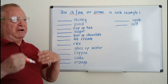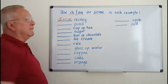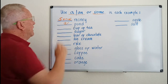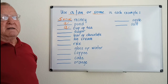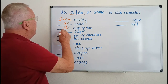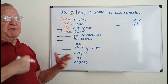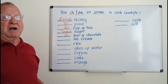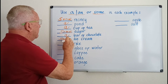Money — uncountable, so we say 'some money.' Pond — countable: 'a pond.' Cup of tea — countable: 'a cup of tea.' Sugar — uncountable: 'some sugar.' A bar of chocolate — using 'of' makes it countable: 'a bar of chocolate.' Ice cream — uncountable: 'some ice cream.' If it were an ice cream bar, we'd say 'an ice cream bar.'